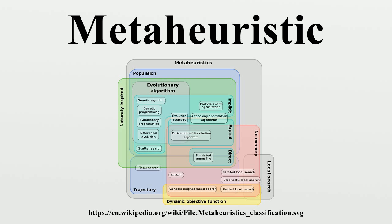Nature-inspired meta-heuristics: A very active area of research is the design of nature-inspired meta-heuristics. Many recent meta-heuristics, especially evolutionary computation-based algorithms, are inspired by natural systems. Such meta-heuristics include ant colony optimization, particle swarm optimization, cuckoo search, and artificial bee-colony, to cite a few. Many nature-inspired meta-heuristics mediate between local and global search and are therefore instances of dual-phase evolution.